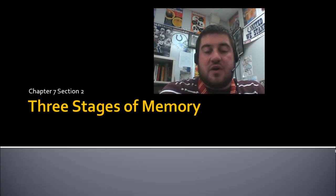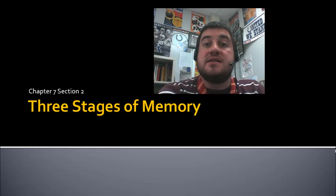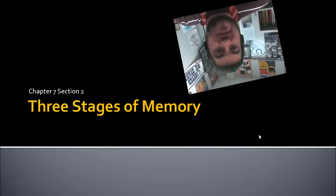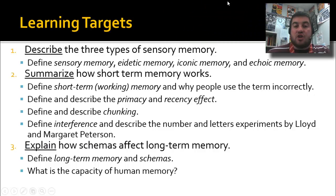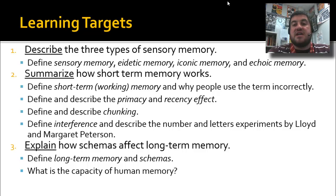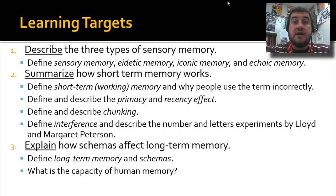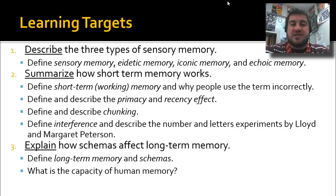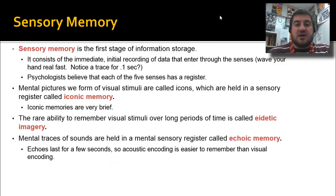Hi and welcome back to Psych with Mr. Snyder. Today we are in the middle of chapter 7 talking about the three stages of memory. Let's go ahead and get started. Take a look at our learning targets: we're going to talk about sensory memory and its three types, short-term memory and why people usually use that term incorrectly, and then long-term memory and the term schemas.